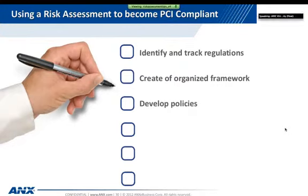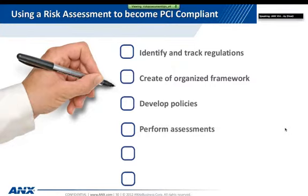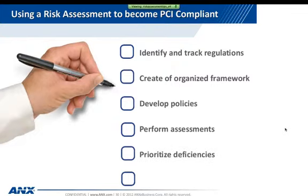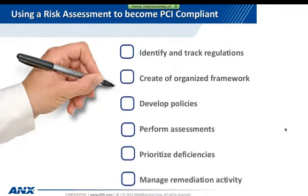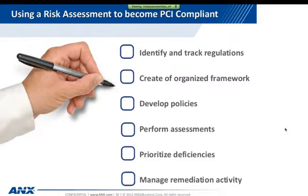Third, develop, document, and communicate appropriate policies, procedures, and standards which are in alignment with the organizational control framework. Next, perform assessments and audits to identify control deficiencies. Number five, prioritize deficiencies based on a consistent risk methodology. And number six, manage remediation activity and chart progress to the organizational objectives of PCI compliance.